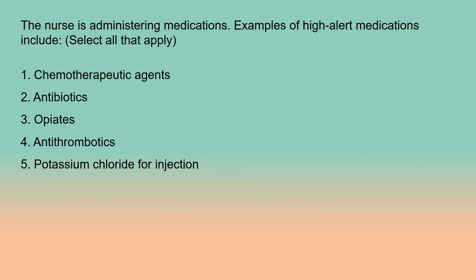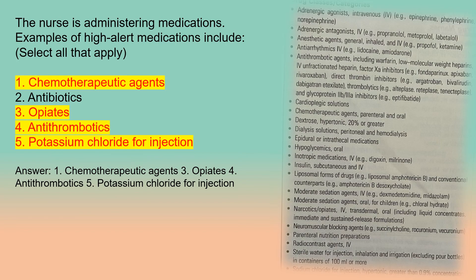A nurse is administering medications. Examples of high alert medications include — select all that apply: 1. Chemotherapeutic agents. 2. Antibiotics. 3. Opiates. 4. Antithrombotics. 5. Potassium chloride for injection. Answer: 1. Chemotherapeutic agents. 3. Opiates. 4. Antithrombotics. 5. Potassium chloride for injection.